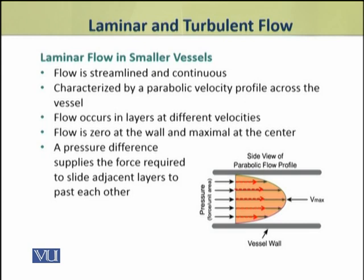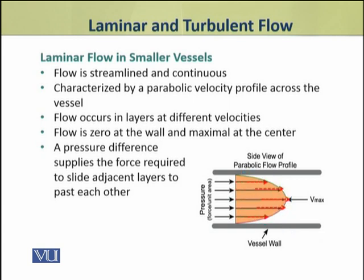First we shall discuss laminar flow in smaller blood vessels. In smaller blood vessels the flow is streamlined and continuous. It is characterized by a parabolic velocity profile across the vessel. When blood is moving, the fluid's characteristic is that it has a parabolic movement in a vessel. Flow also occurs in layers which are moving at different velocities — flow is zero at the wall and maximum at the center.